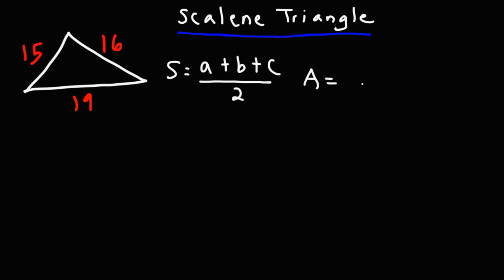Once we know the value of S, we can plug it into this formula to get the area of the scalene triangle. So it's the square root of S times S minus A times S minus B times S minus C.